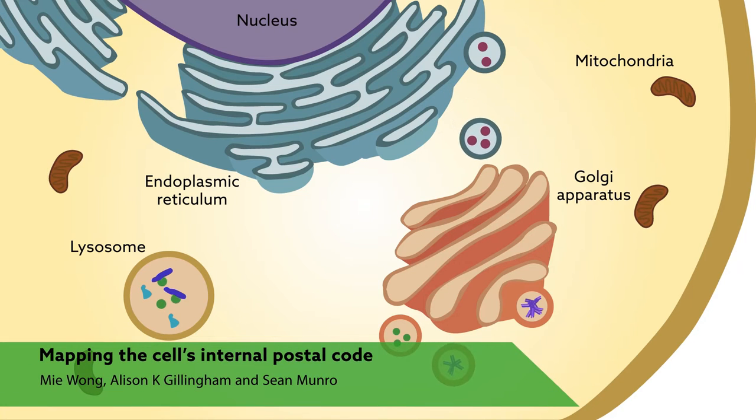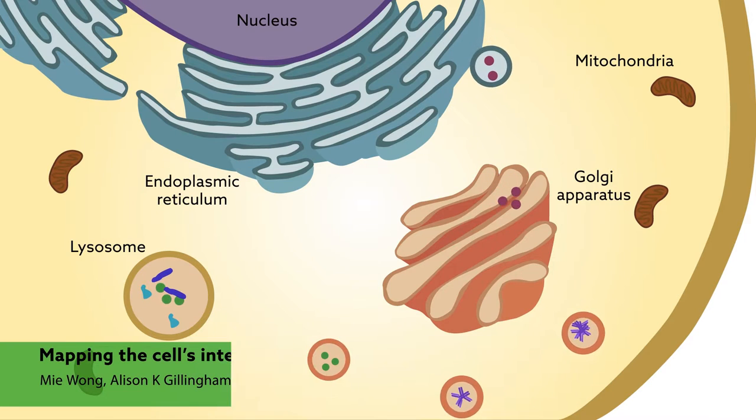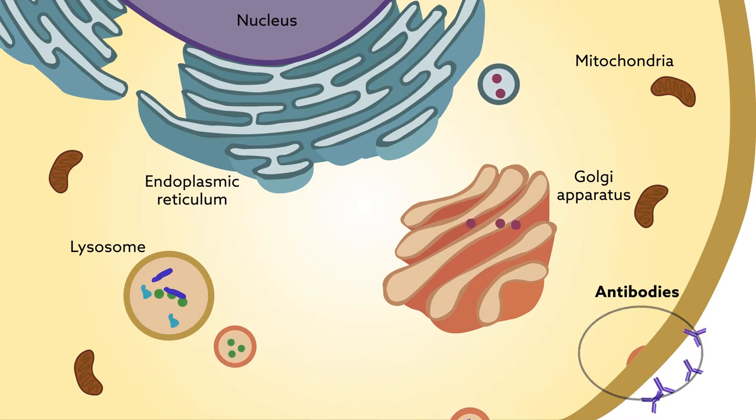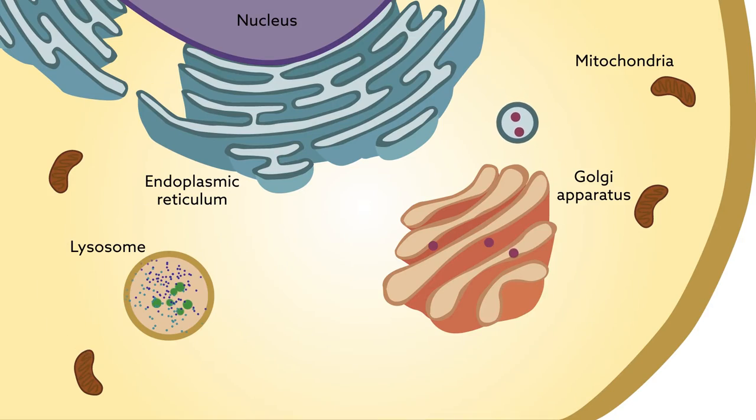The inside of a cell is abuzz with activity, including constant shipments of proteins in membrane-bounded vesicles, antibodies headed out to the bloodstream to fight disease, enzymes destined for lysosomes to break down and recycle cellular material. But how do all these vesicular parcels get to the right place?